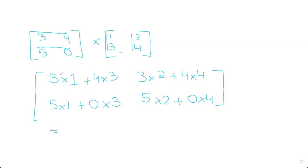So we get 3 plus 12, which is 15, and here we get 22. Here we get 5, and here we get 10. So that's how easy it is when you multiply two matrices.